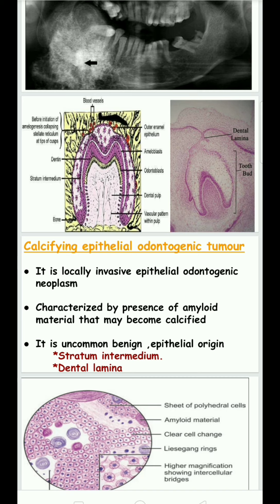It is of epithelial origin. Previously it was said to arise from the reduced enamel epithelium, but actually it arises from the stratum intermedium and dental lamina. It is characterized by the presence of amyloid material that becomes calcified.